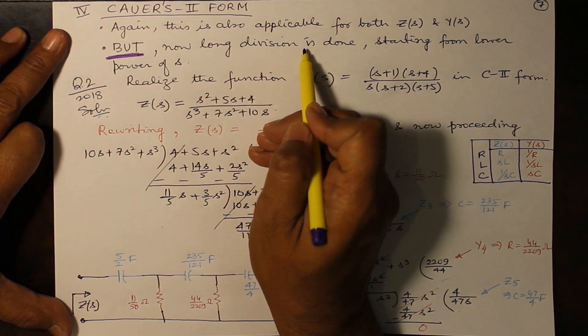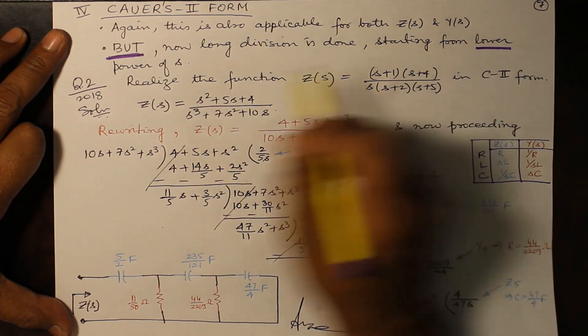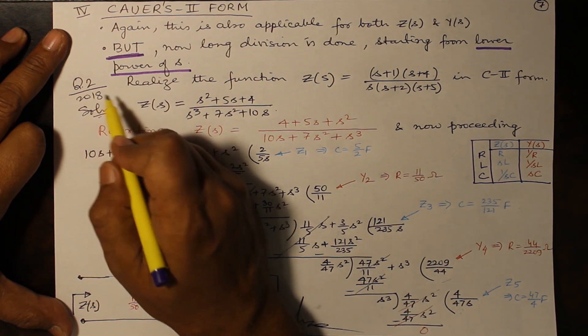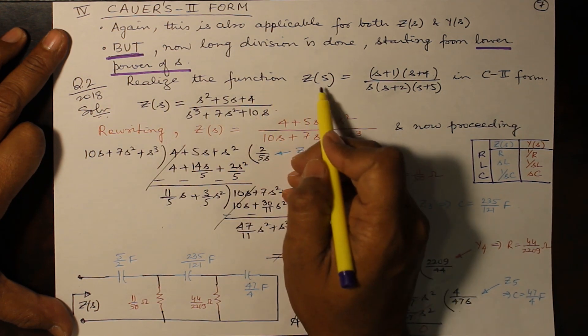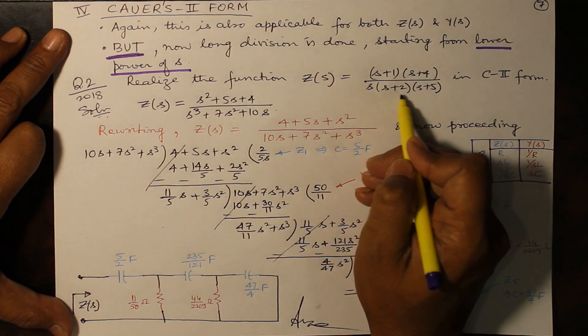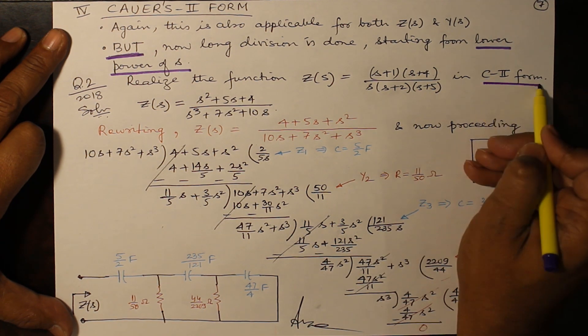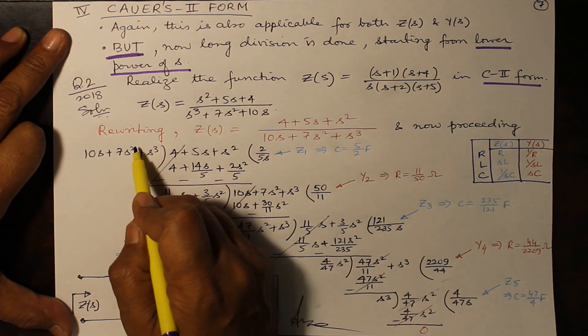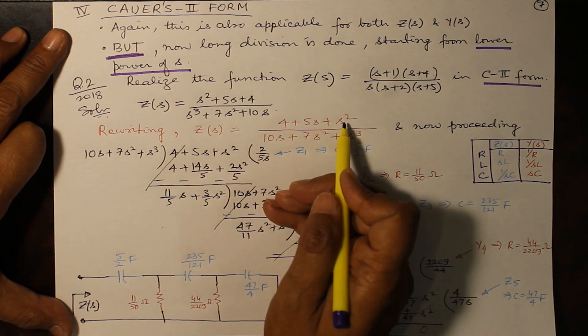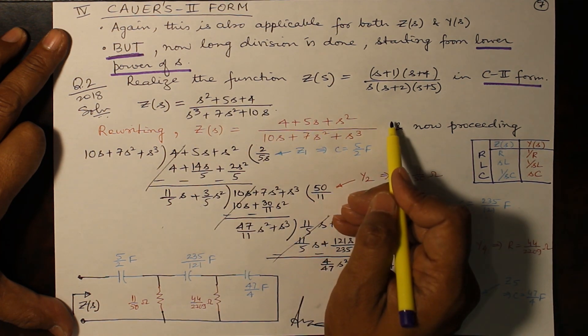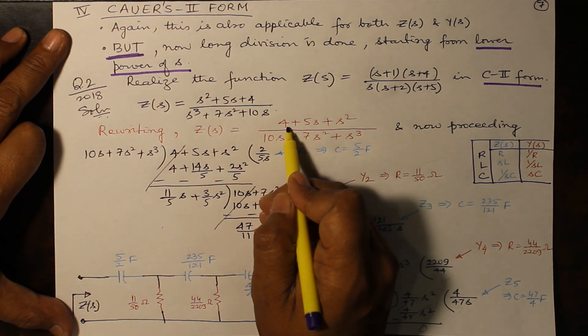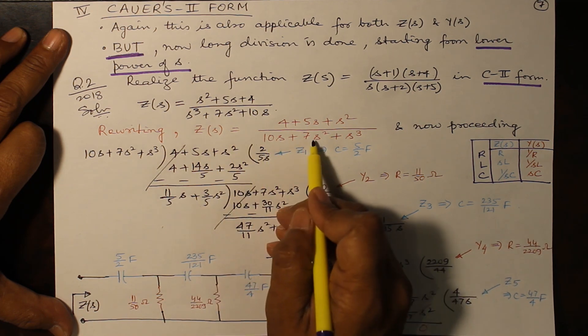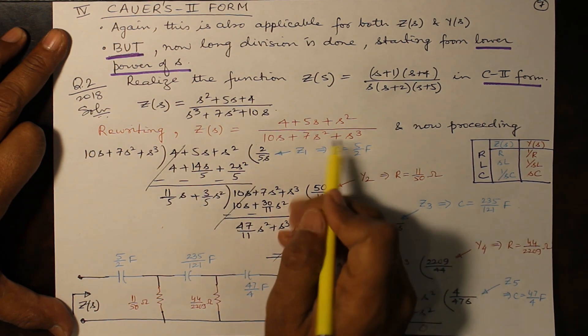This is important. In 2018 second part: realize the function Z(s) = (s+1)(s+4) divided by s(s+2)(s+5) in Cauer's II form. First we write down the function Z(s), expand it and rewrite them in the ascending power of s. So the lowest power of s will be in the beginning. So 4 + 5s + s² this will give you 10s + 7s² + s³.